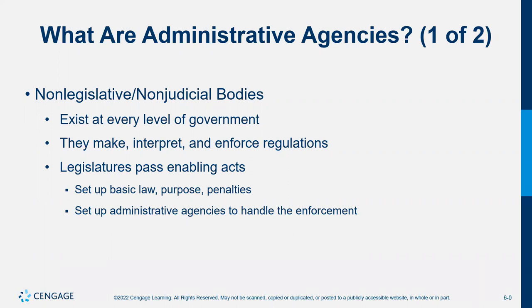What does the executive branch do? They enforce the laws. They execute the law — not in the sense of killing, but making sure it happens. So that's what the three branches of government do in really broad terms.